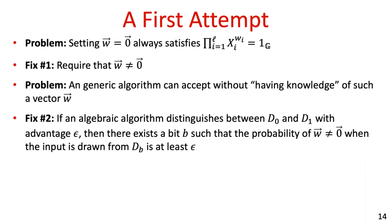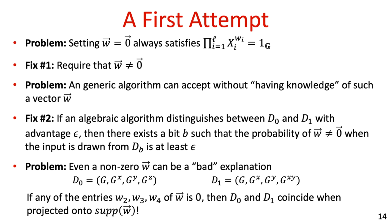Consider a more subtle definition which requires that if an algebraic algorithm A distinguishes between two distributions d0 and d1 with advantage epsilon, then there exists some bit b such that when A is executed on an input drawn from db, it outputs a non-trivial vector w satisfying the multiplicative condition with probability at least epsilon. This definition already suffices for some applications and is indeed a weakening of the generic group model. However, even if w is non-trivial, it can still be a bad explanation. Consider for example the DDH problem: a vector w with a zero entry in one of its last three entries means that when we project d0 onto the support of w, we get exactly the same distribution as projecting d1 onto the support of w, making the zero test unable to distinguish between the two distributions.